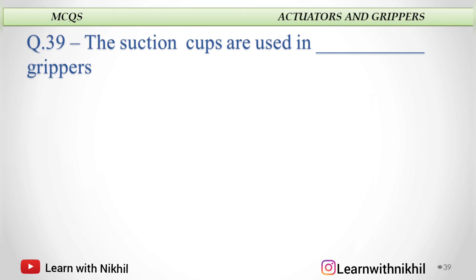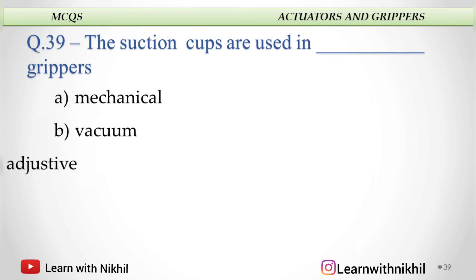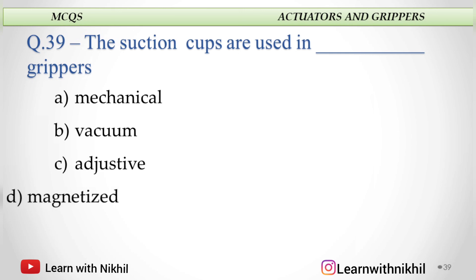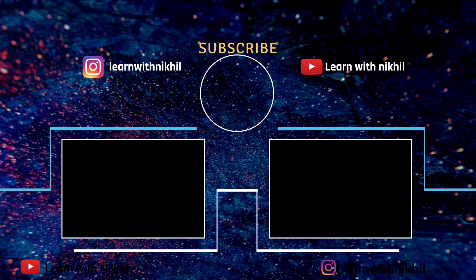The suction cups are used in dash grippers: A. Mechanical, B. Vacuum, C. Adhesive, or D. Magnetized? And the answer is vacuum gripper.